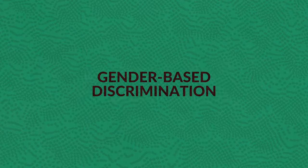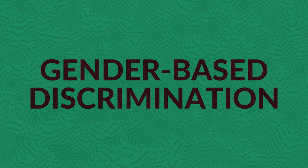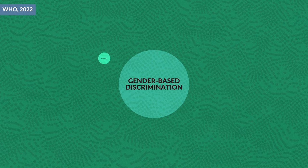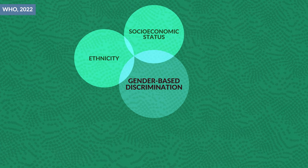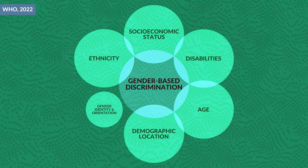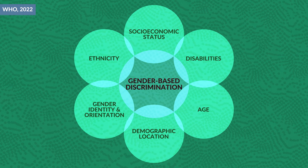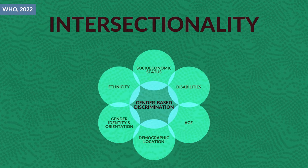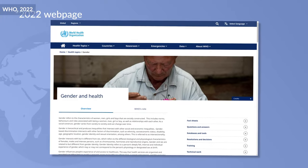What's also important to understand is that gender is hierarchical and it can, and often does, produce inequalities that can intersect with other social and economic inequalities. We often see gender-based discrimination intersecting with factors like ethnicity, socioeconomic status, disabilities, age, demographic location, and gender identity and orientation. This coming together of different characteristics is known as intersectionality. All of these things come from the World Health Organization, which also discusses them in a 2022 paper.